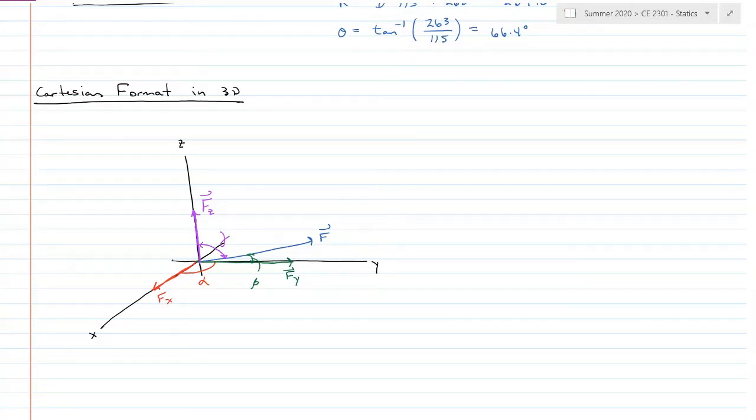Similar to Cartesian format in 2D, force x equals the magnitude of the force times cosine of alpha, the angle between the force and the x-axis. Force y equals the magnitude of force times cosine of beta. Force z equals force times the cosine of gamma. Three different angles, all directly to those axes.